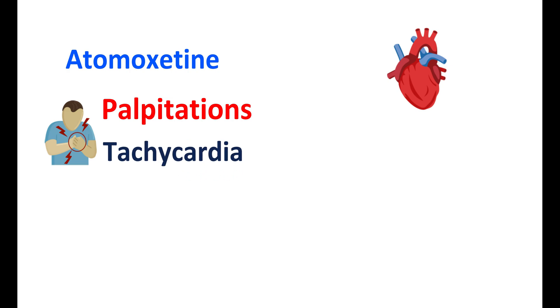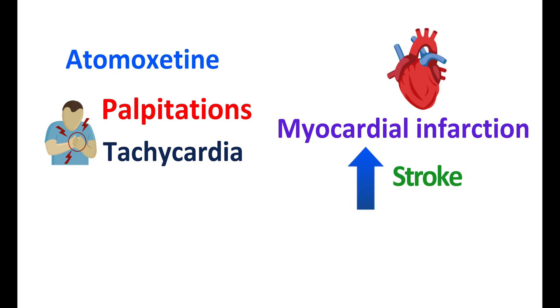What are the important precautions? Atomoxetine can affect the function of your heart. It can increase the heart rate resulting in palpitations and tachycardia. In people with myocardial infarction or cardiac structural abnormalities, this drug may increase the risk of stroke or even sudden death.